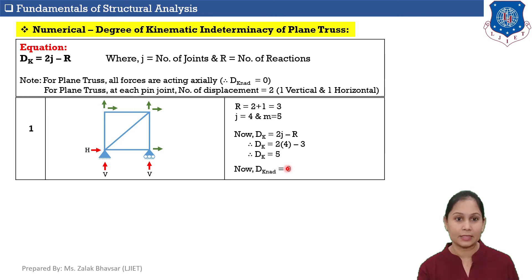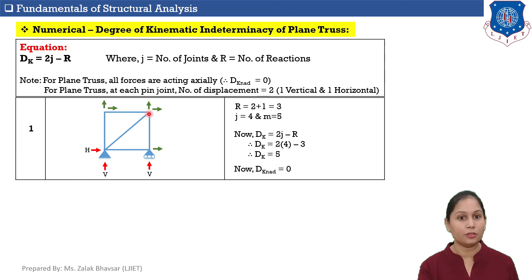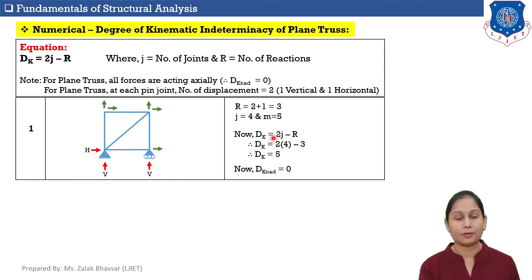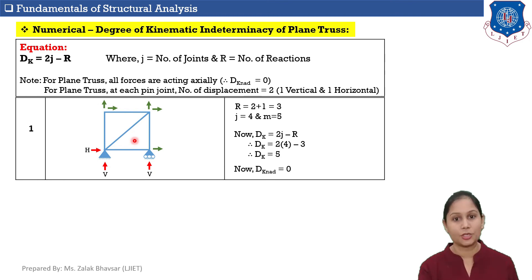Verifying from the figure: there are 2 free pin joints, and at each pin joint 2 displacements are possible, giving 4 total. Plus 1 horizontal displacement at the roller support. So total equals 5, which matches our equation answer. In the case of plane trusses, all deformations are axial, so DK_NAD equals 0.